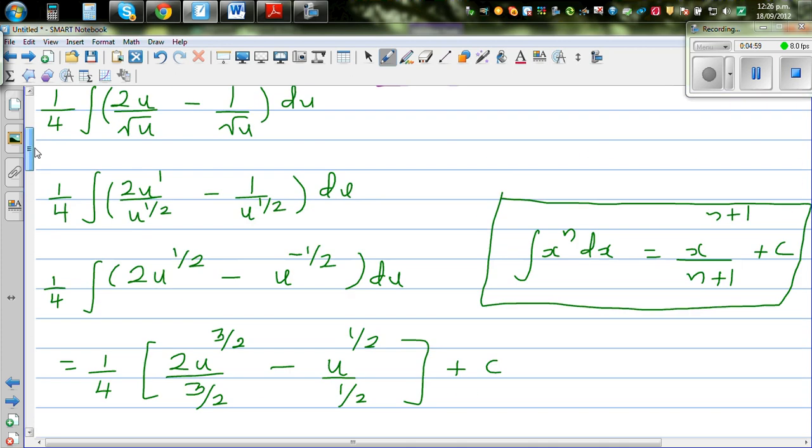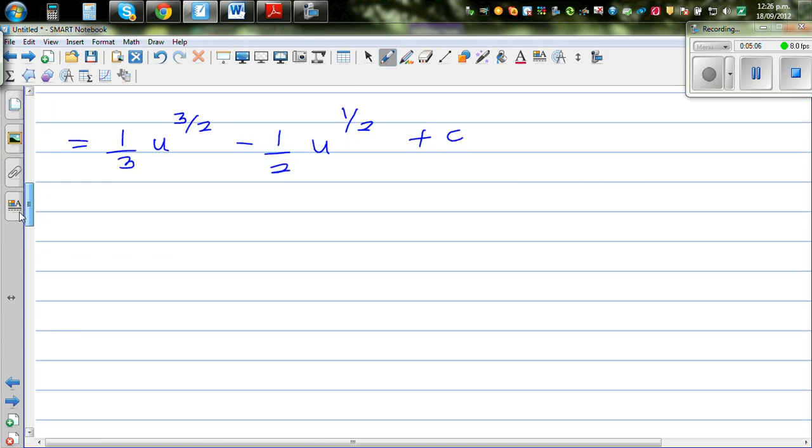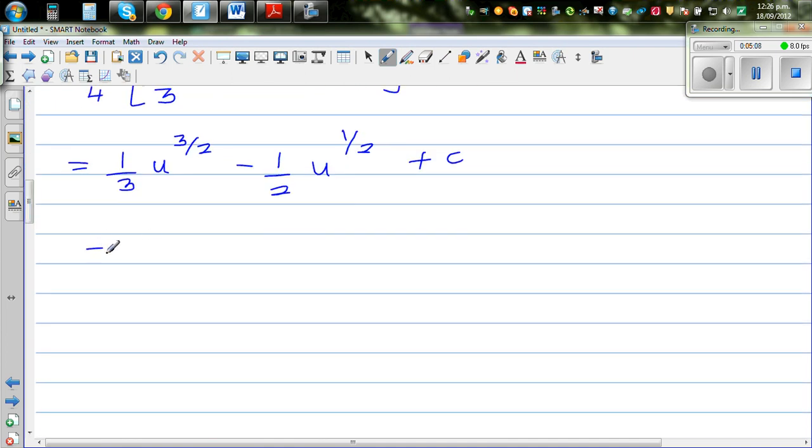So we are almost there. What is u? u is 4x plus 7. So we have to back substitute u as 4x plus 7. So the final answer is 1 third times 4x plus 7 raised to 3 halves minus 1 half times 4x plus 7 to the power half plus c.